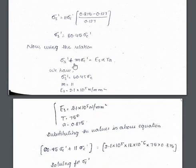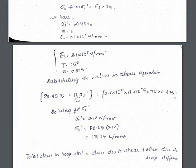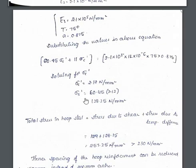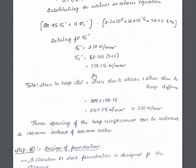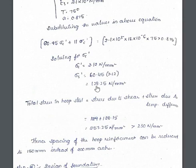Now using the relation σs' + m × σc' = Es × α × t × a, and substituting σs' = 60.45 × σc', the only unknown remaining is σc'. Solving, we get σc' = 2.12 N/mm². Substituting back gives σs' = 60.45 × 2.12 = 128.25 N/mm².